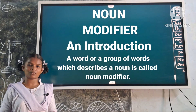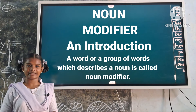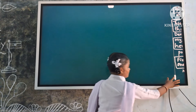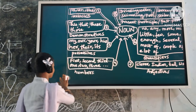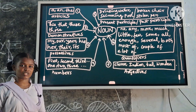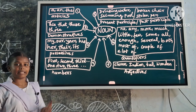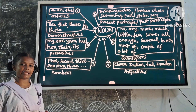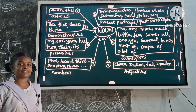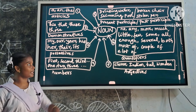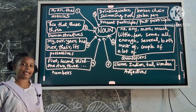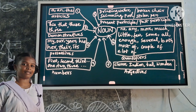What are the different noun modifiers? Let us see. First one: articles — 'a' and 'the'. These are noun modifiers because they describe the noun. Examples: a boy, an apple, the boys.